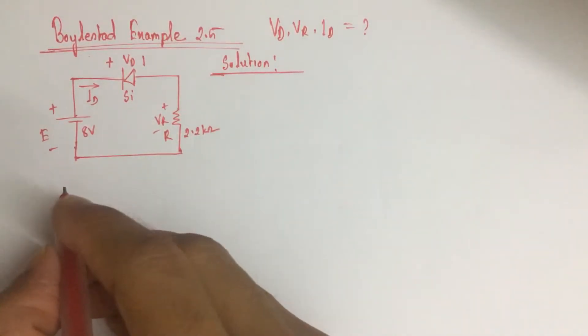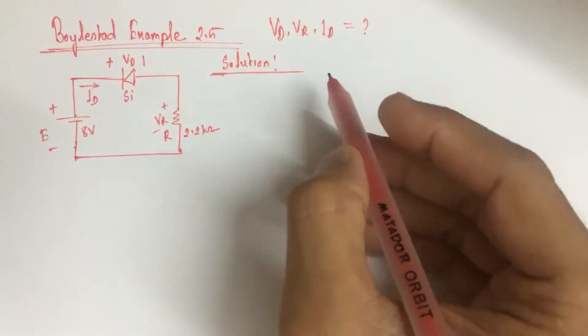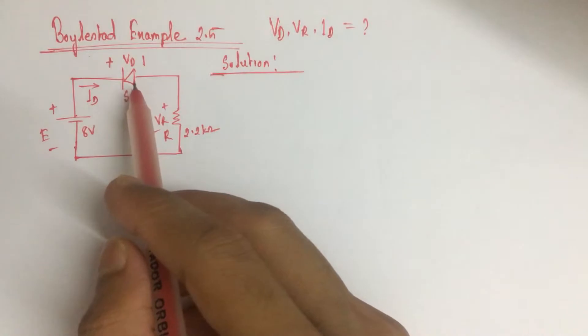For solving diode related problems, at first we have to identify the state of the diode. Either the diode is on or off.